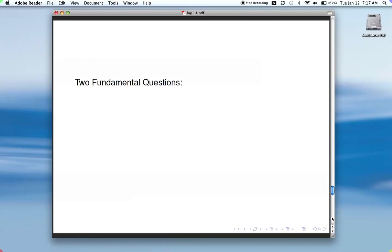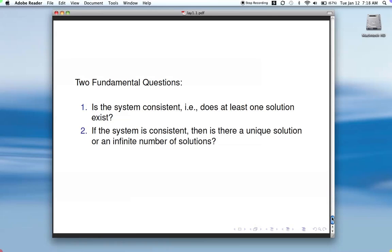This leads us to two questions. The first one is, is the system consistent? Does it have at least one solution? And if that's so, if it's consistent, then is that solution unique or are there an infinite number of solutions? So we'll talk about how to determine. Number one, is the system consistent? Number two, if it is, then how do you know if there's a unique solution or an infinite number of solutions?